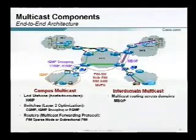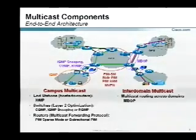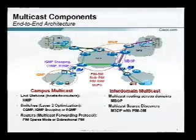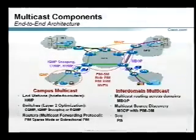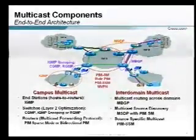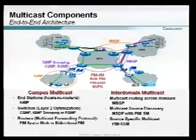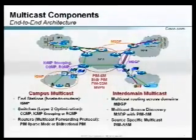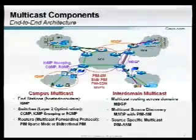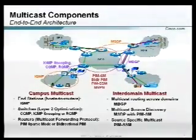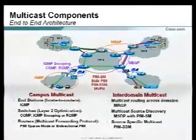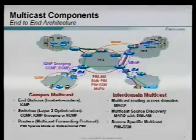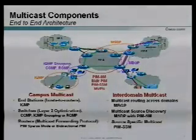We'll spend the majority of our time on the inter-domain side — protocols such as multi-protocol BGP, which lets us control multicast traffic between domains, and multicast source discovery protocol (MSDP), which allows us to discover which sources exist so we can join them, and source-specific multicast. Throughout this presentation, I've been asked to keep things as vendor-neutral as possible, removing most vendor-specific configuration examples.